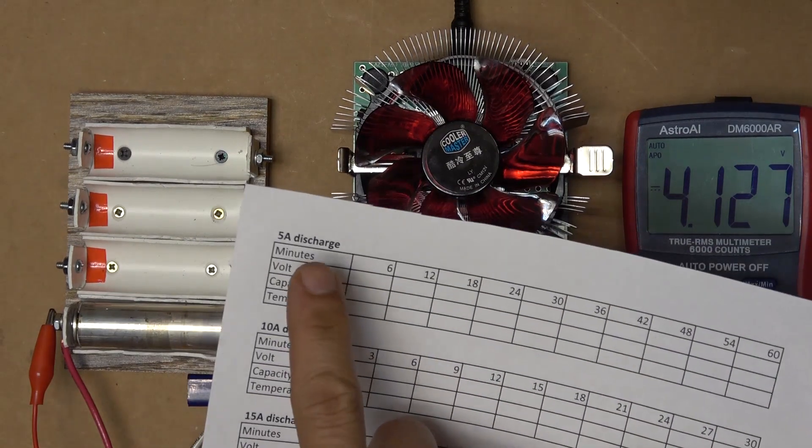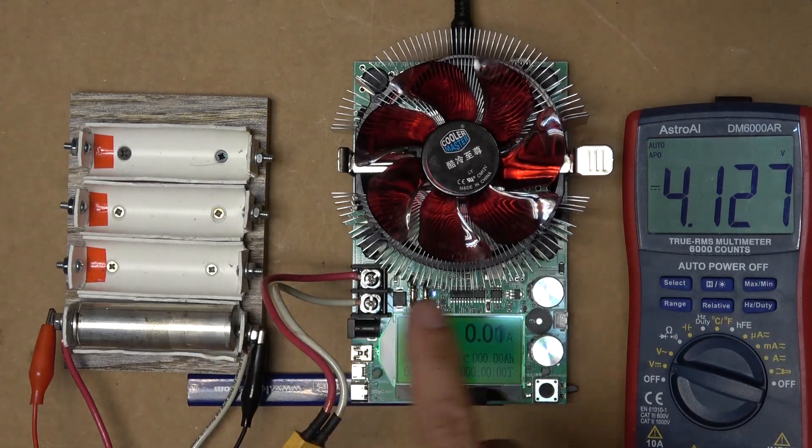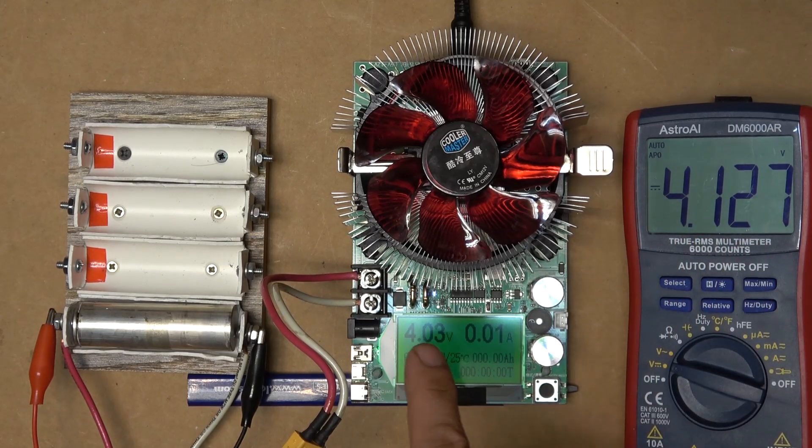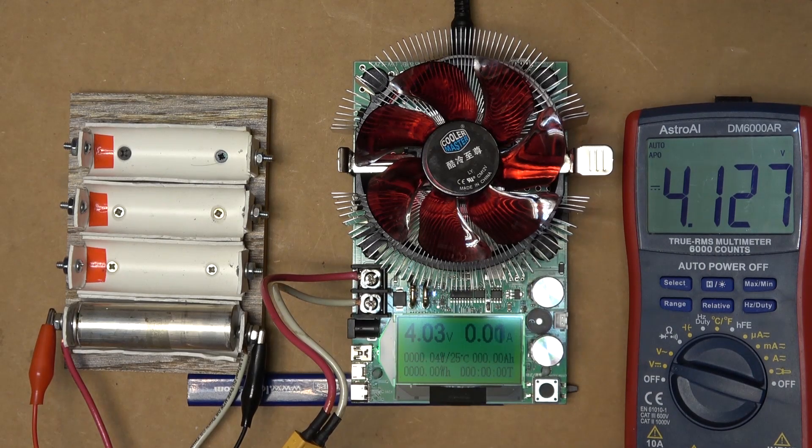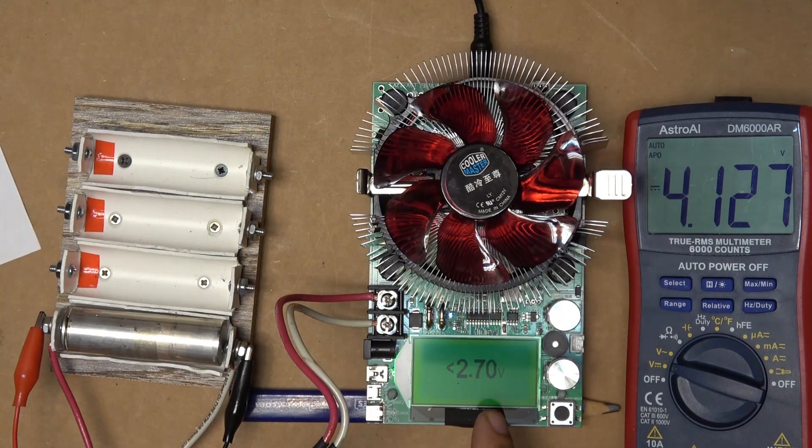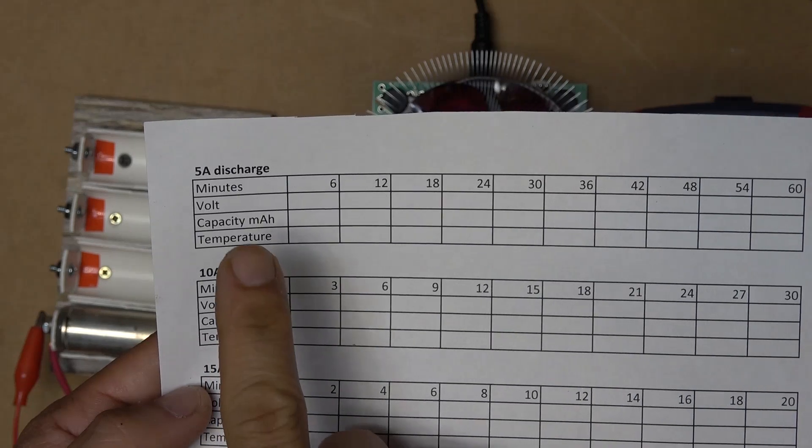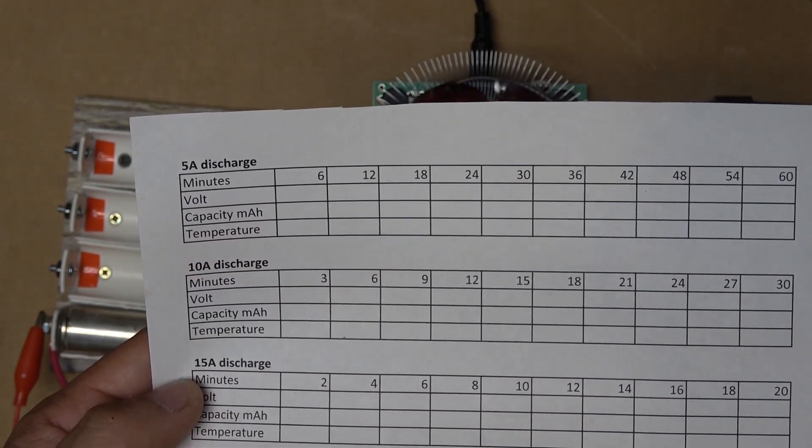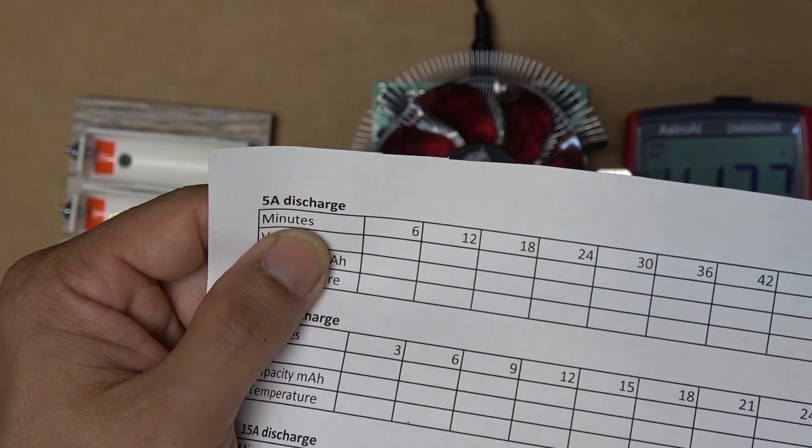It's time for our first discharge test which is a 5 amp discharge. The actual battery voltage on my meter shows 4.13 volts and here shows 4.03 volts. So this device is off by 0.1 volts. I want the low voltage cutoff to be around 2.8 volts so I have to adjust this down to 2.7 volts. These are the data I'm going to record: time, volts, capacity and temperature. And I'm going to have 10 points of data.